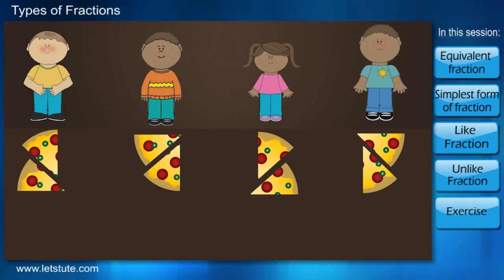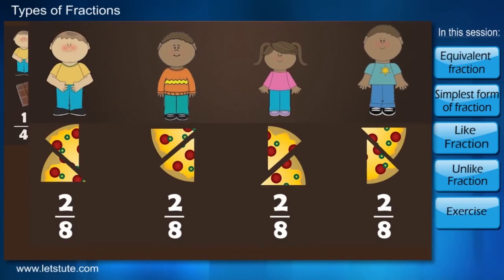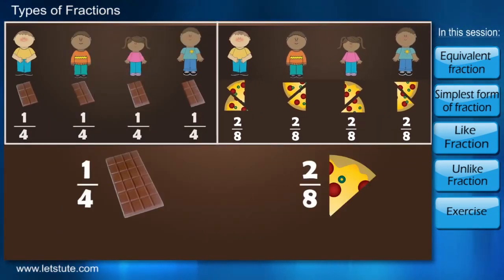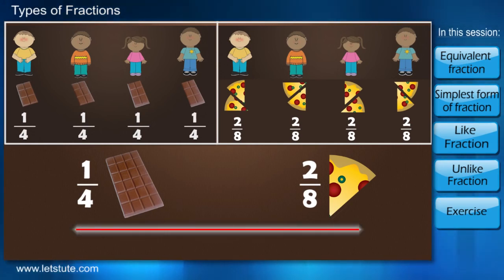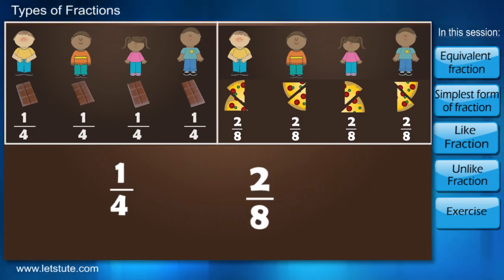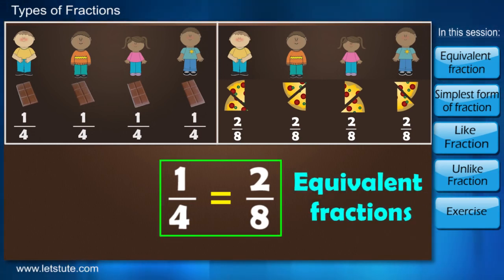Now here each one of you will get two pieces out of the eight, so what will be the fraction here? Two by eight, right? But what if I tell you that everyone had the same fraction of chocolate and pizza, but this doesn't look the same. Here two by eight and one by four are the same but written in a different manner, and these kinds of fractions are known as equivalent fractions.